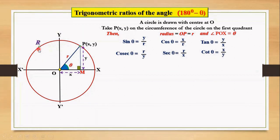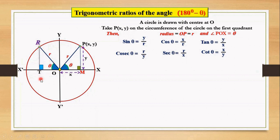Let's take one more point R on the circumference in the second quadrant so that we have the angle ROX-dash equals theta and OR is the radius. Let's draw RT perpendicular to the x-axis.